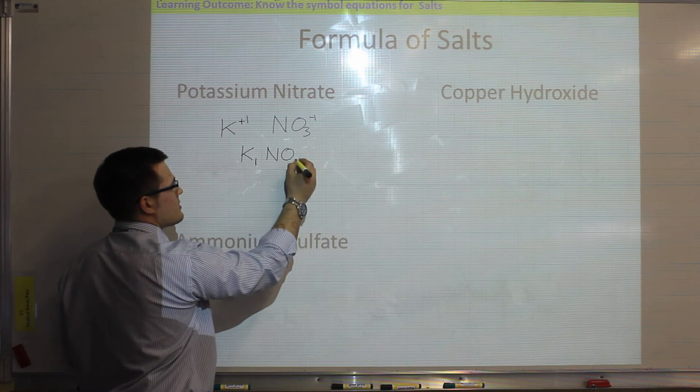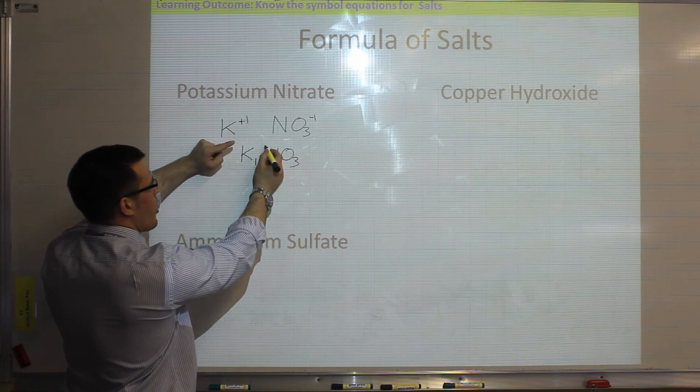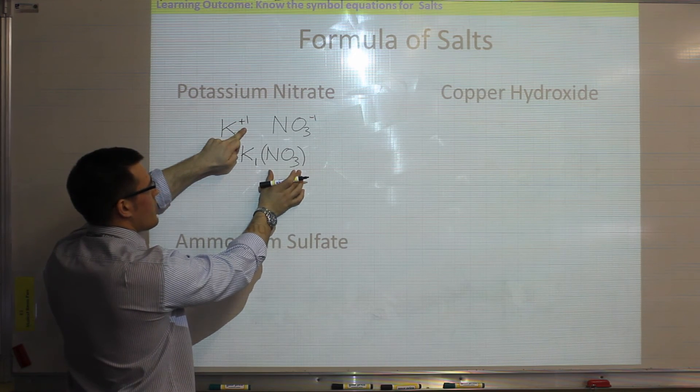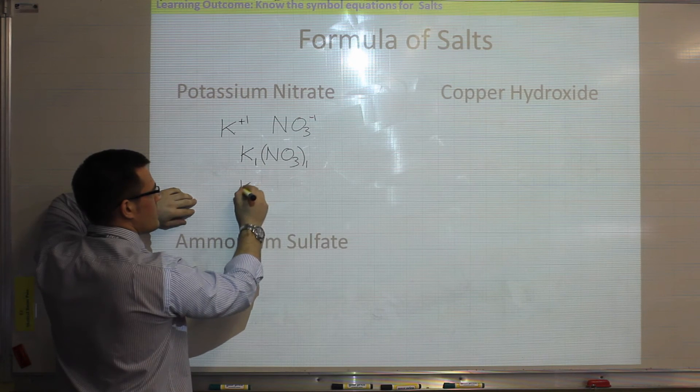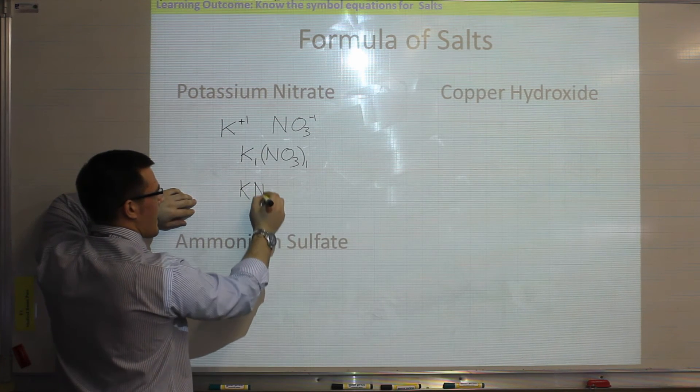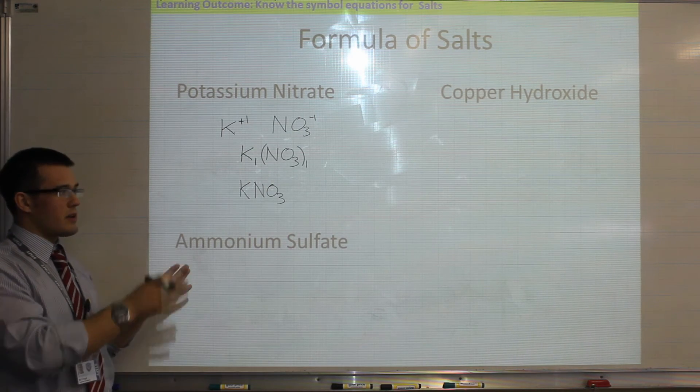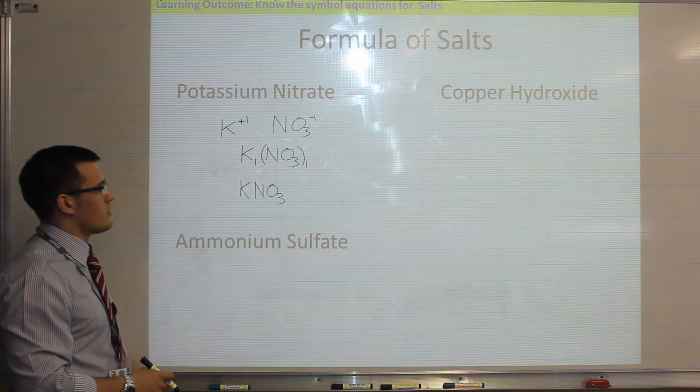And when I do my nitrate, remember the nitrate is a group of ions, so the whole group of them, I need to times by the number on the potassium, so that's only 1. So that one's straightforward, and is KNO3, which should make sense if you think about the first method we looked at. They just need to balance, so plus 1 balances with minus 1.